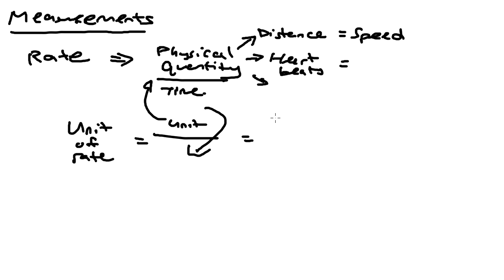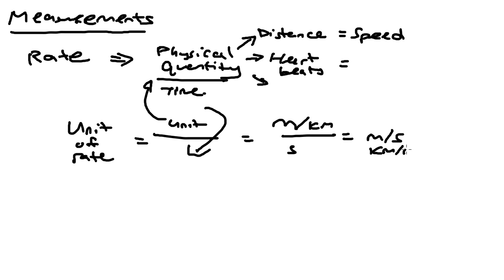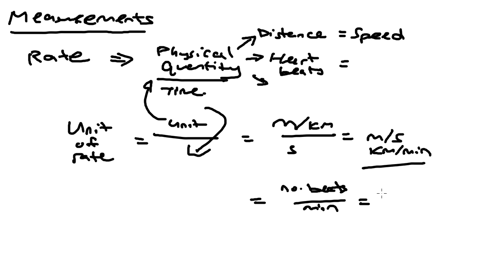In the case of speed, the unit of distance is meters or even kilometers, and the time will be seconds, minutes, or hours, so you get something like meters per second or kilometers per minute. In the case of heartbeat, you can do number of beats per minute. The rate of heartbeat is beats per minute, or beats per hour depending on what you are looking for.